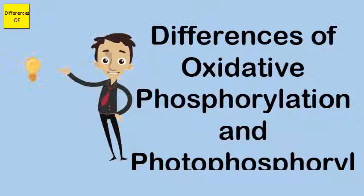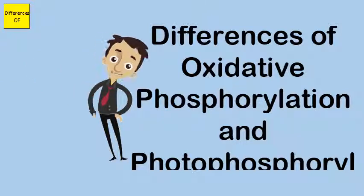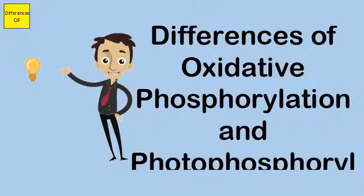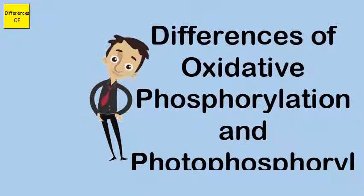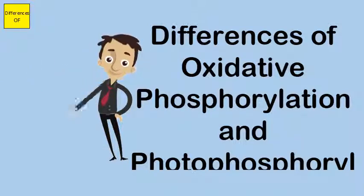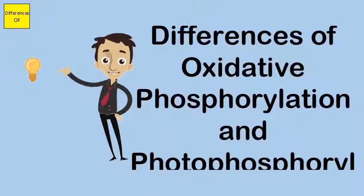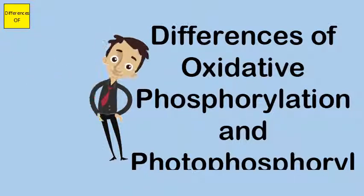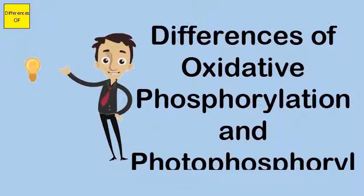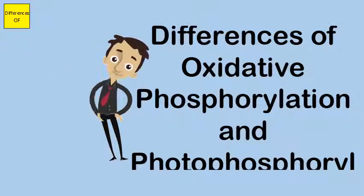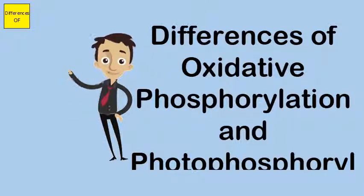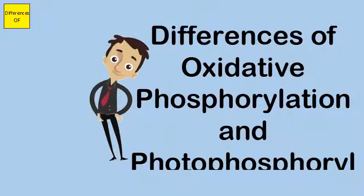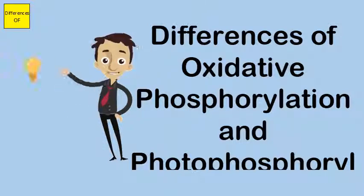In oxidative phosphorylation, the ATP molecules are released into the cytoplasm and these energy molecules are used to carry out various metabolic reactions of the cell. In photophosphorylation, the ATP molecules produced are used to fix CO2 to carbohydrates in the dark reaction.